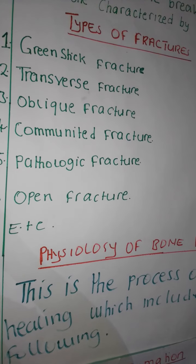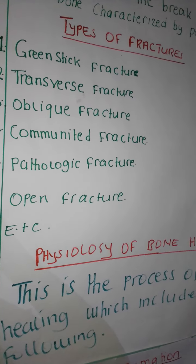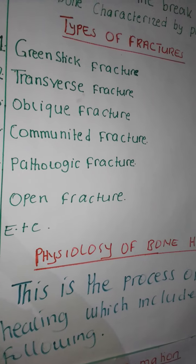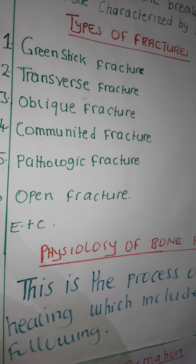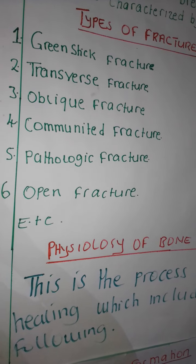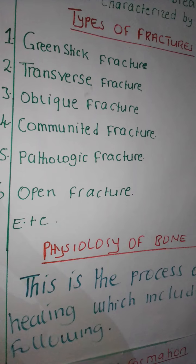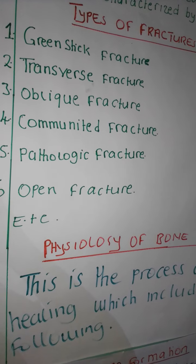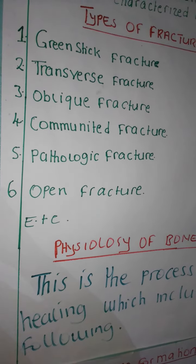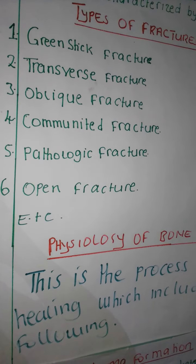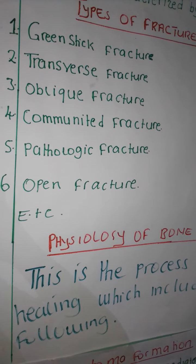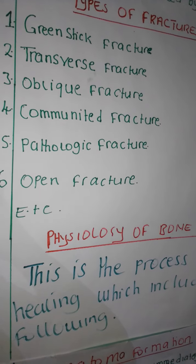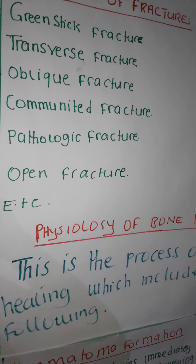Then you have a comminuted fracture — this is a fracture in which there are bone fragments, so there are two or more pieces of bone. Then you have a pathologic fracture — this is a fracture that happens due to a disease condition, like osteoporosis. Then we have an open fracture — this is a fracture in which there is a wound, and sometimes the bone may even be protruding.